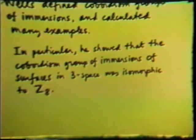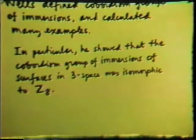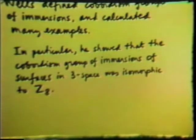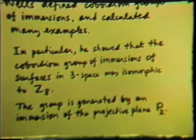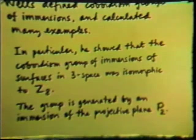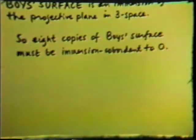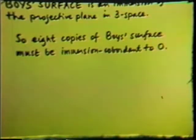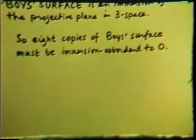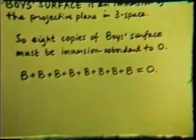Robert Wells defined cobordism groups of immersions and calculated many examples. In particular, he showed that the cobordism group of immersions of surfaces in 3-space was isomorphic to the integers mod 8. The group is generated by an immersion of the projective plane P2. Boyd's surface is an immersion of the projective plane in 3-space, so eight copies of Boyd's surface must be immersion cobordant to zero.